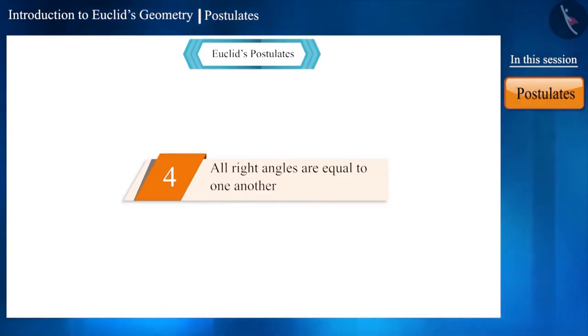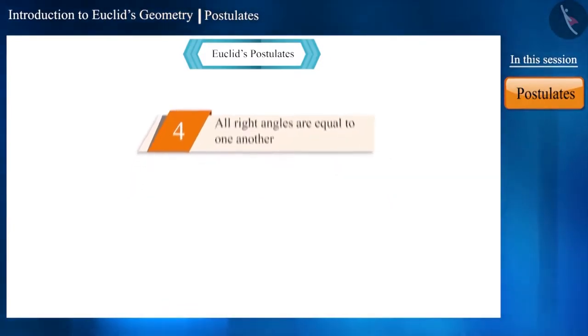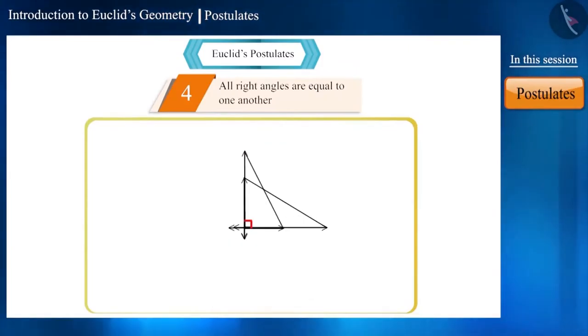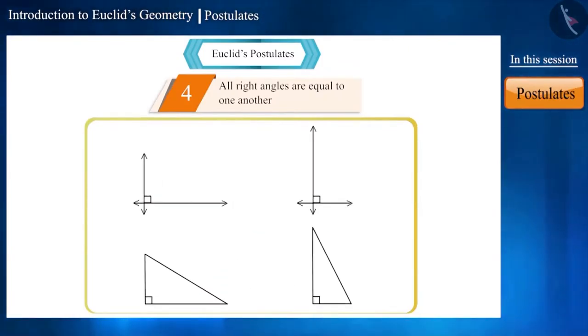All right angles are equal to one another. Friends, this is quite easy to understand. The measure of a right angle is 90 degrees. So, if this angle is made up of two sides or lines or if it is inside any triangle, it will be 90 degrees only.